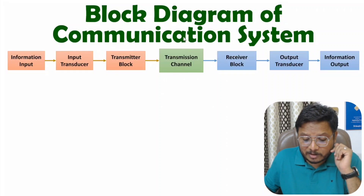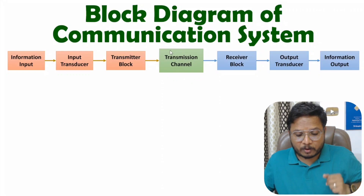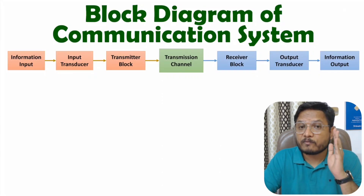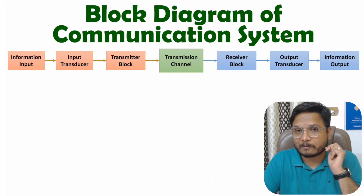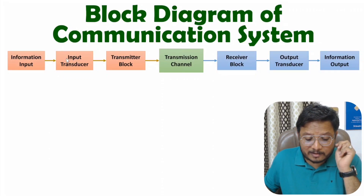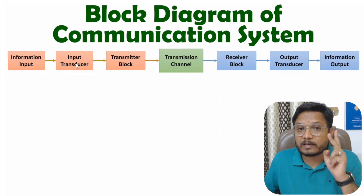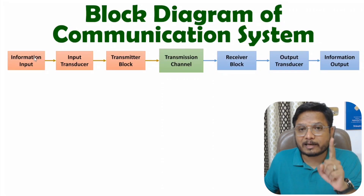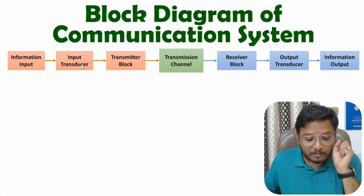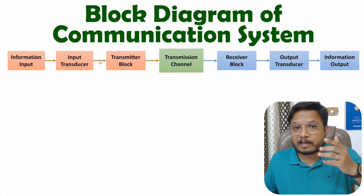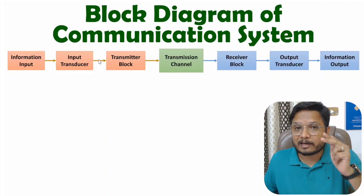So the basic goal of a communication system is to transmit information from sender to receiver via a channel. The first block on the sender side is input information, which can be a physical quantity or an electrical signal. If you have a physical quantity, the next block will be a transducer, which converts the physical quantity into an electrical signal. For example, if the input information is voice, a microphone can convert voice into an electrical signal.